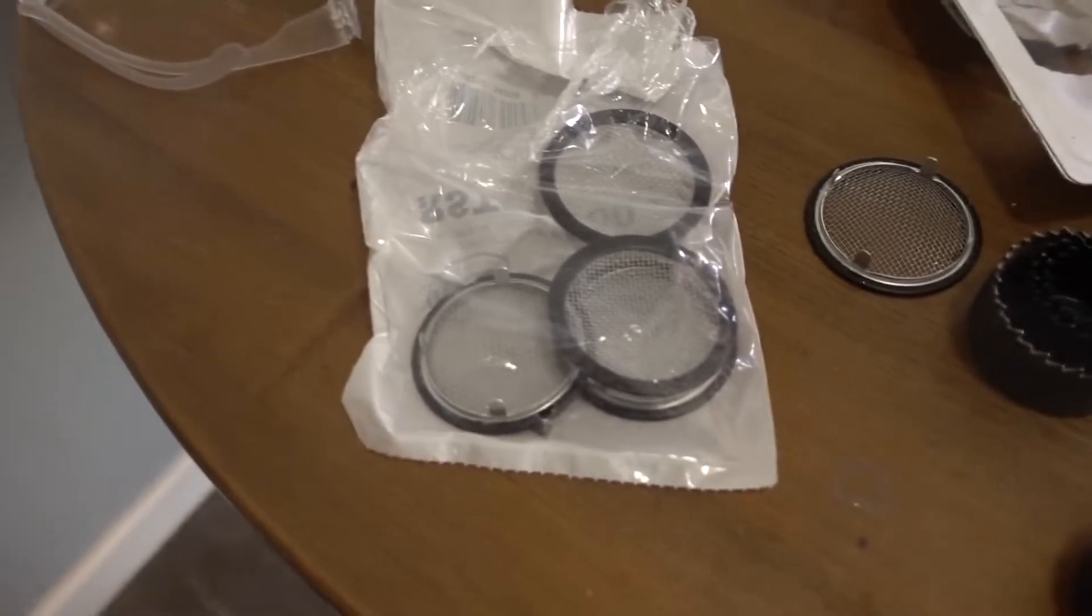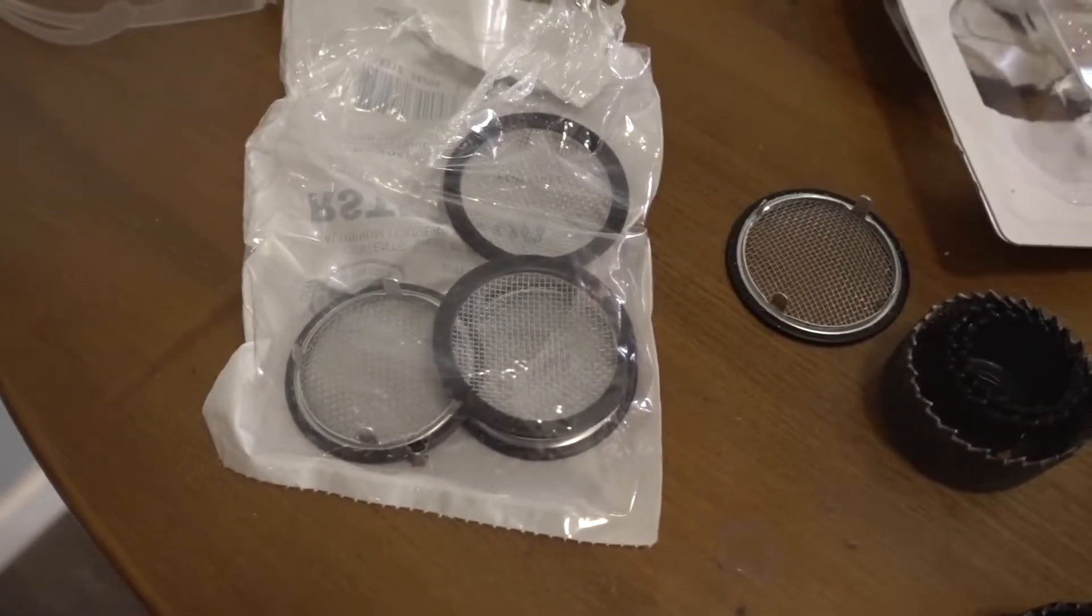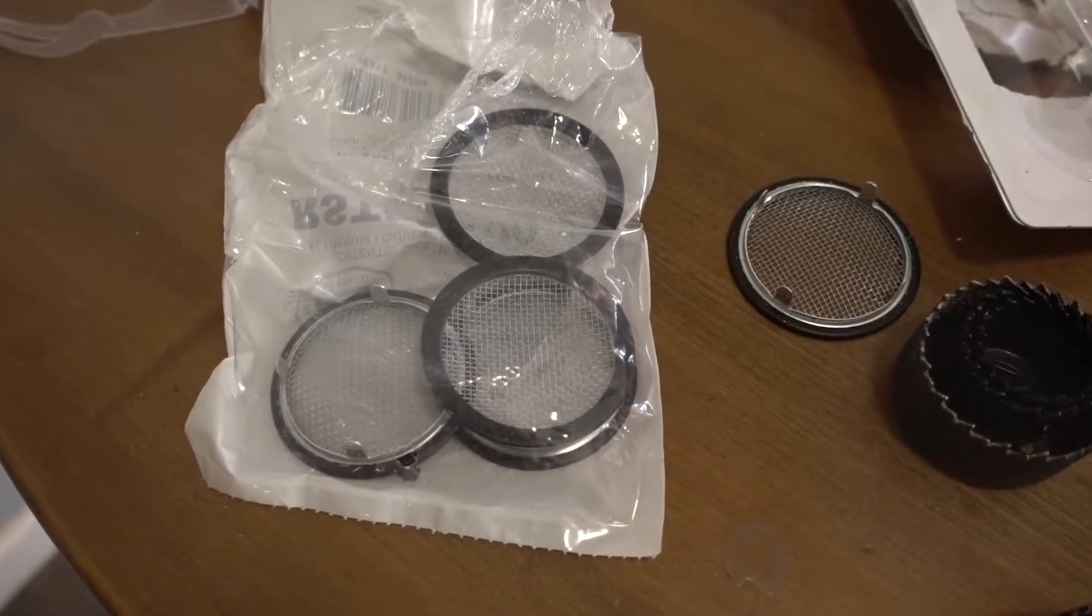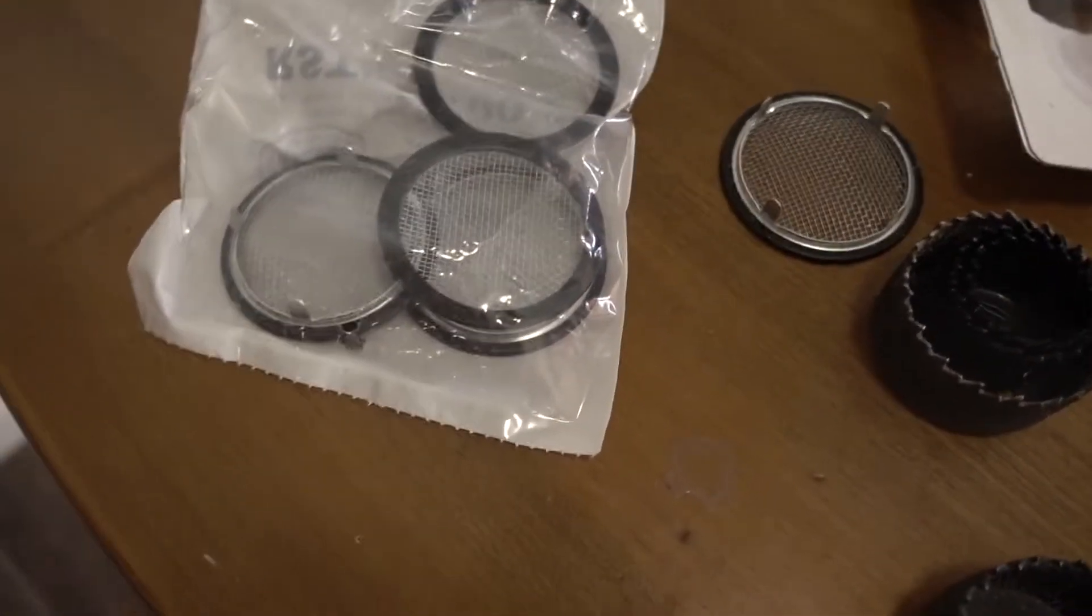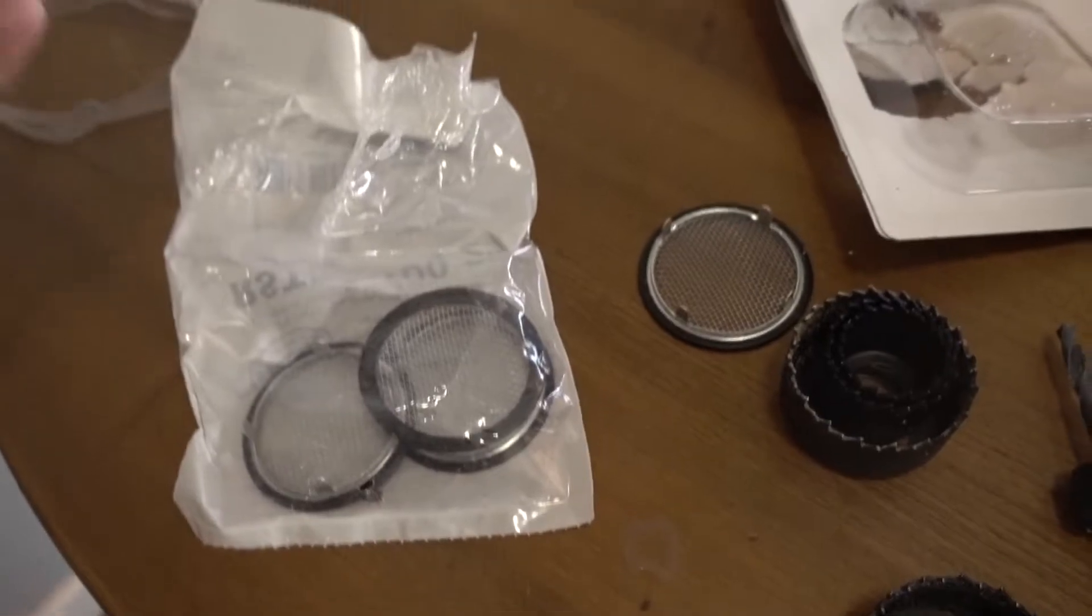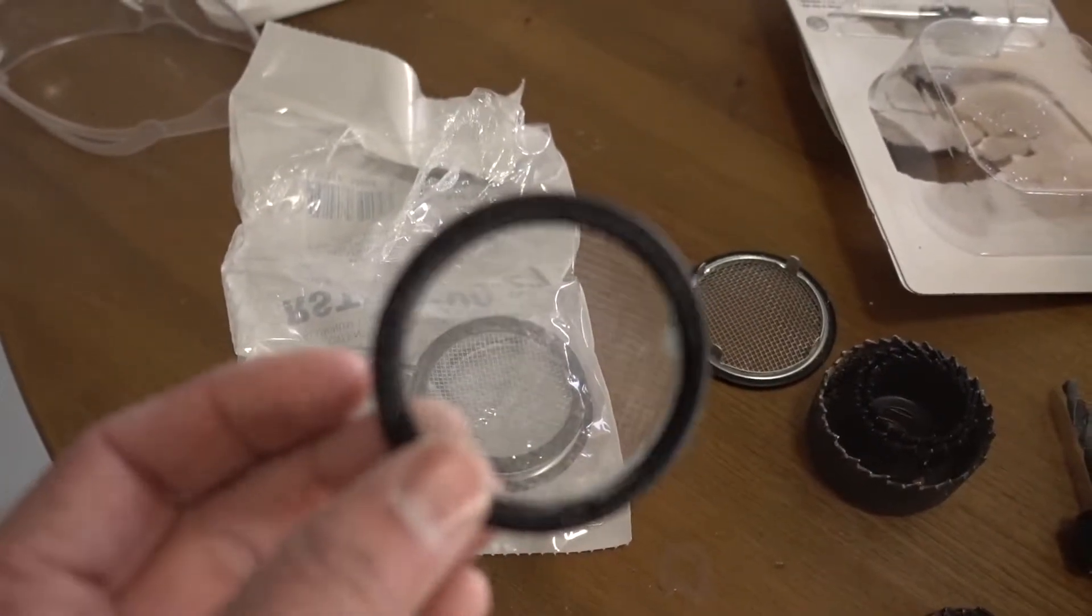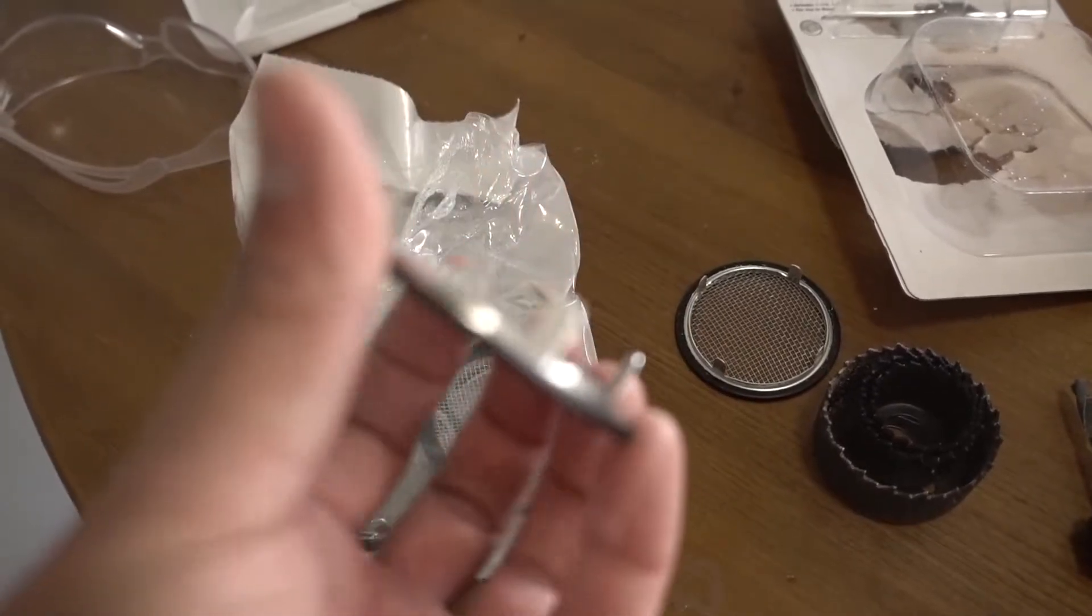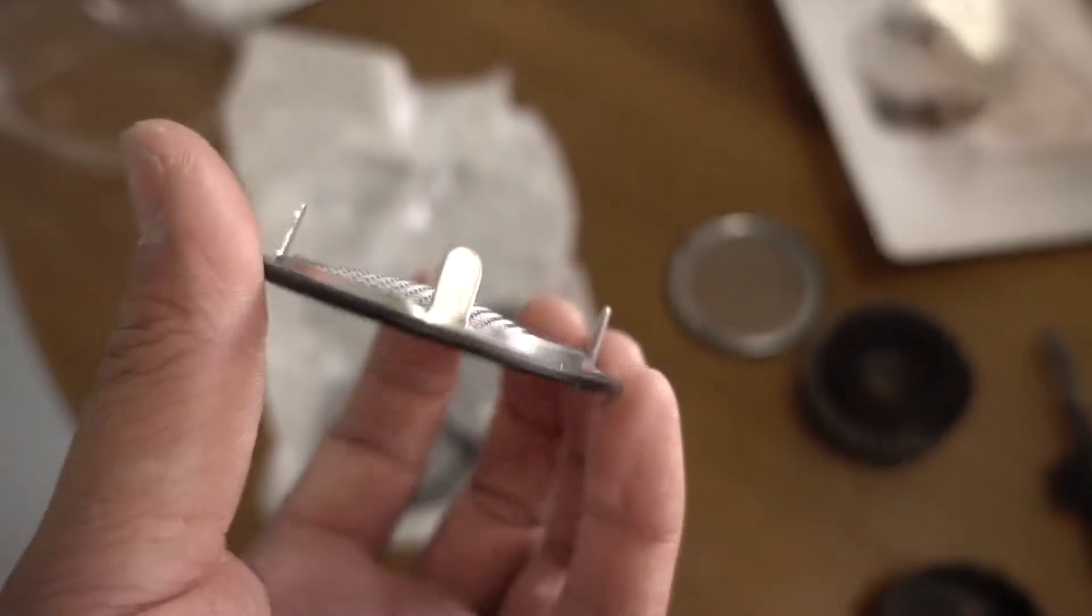First thing you're going to need is the vents themselves. These can be purchased from roundvents.com. I want to say they were around $1.30 per vent but shipping was like $10 so that pushes the cost of each one up. I bought the two inch screen vents with the tabs. Those are what's going to hold them into the tub. You won't need any glue or anything like that.